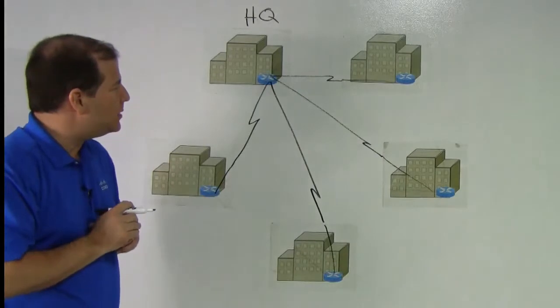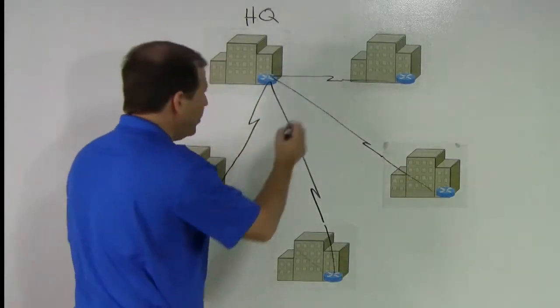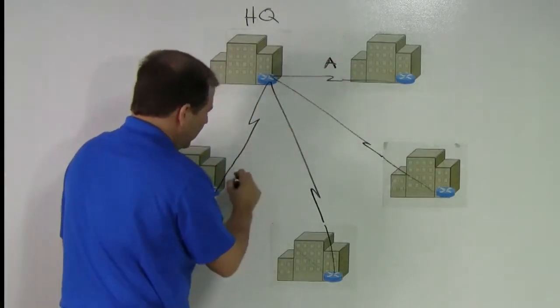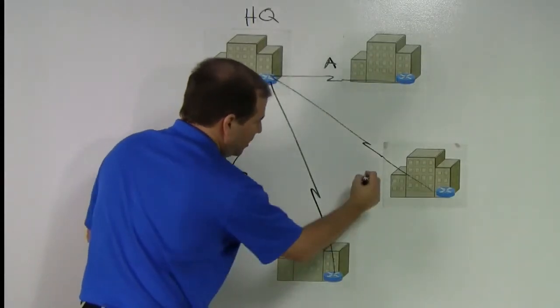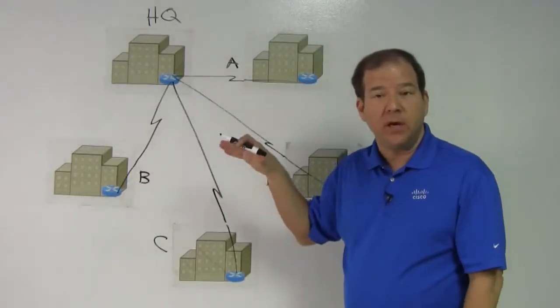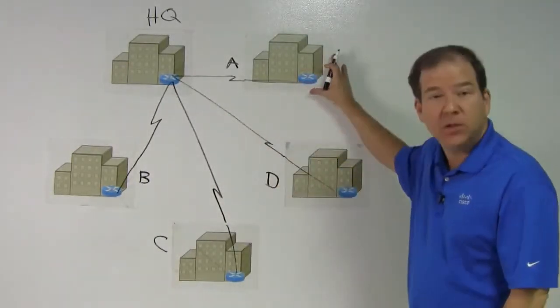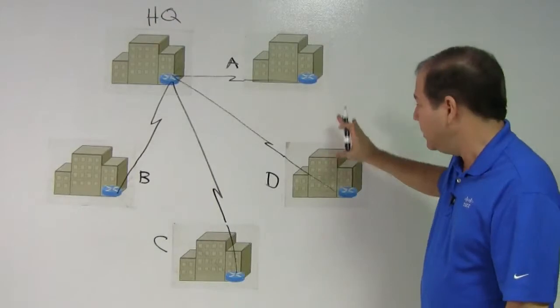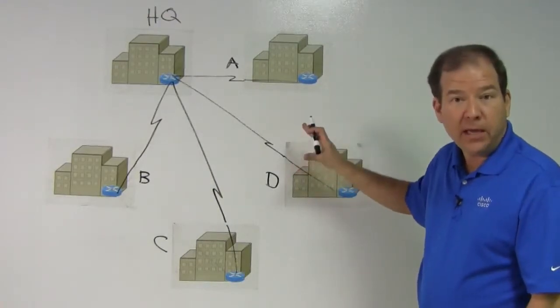However, we realize that some of the other sites - site A, B, C, and D - also have a need to communicate between themselves. For example, let's say that A is the research and development site and D is the engineering site. They communicate frequently.